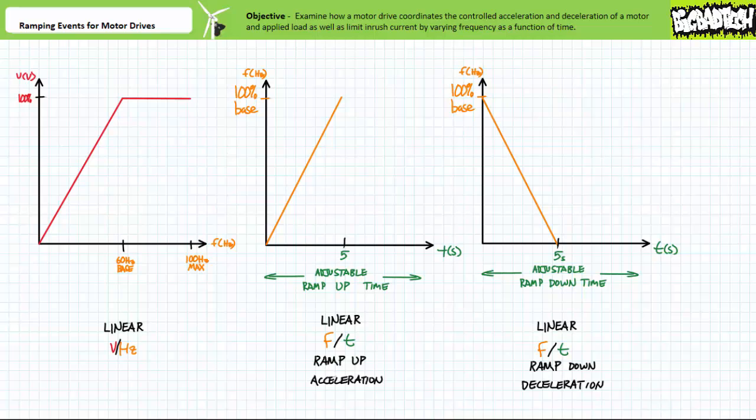Acceleration and deceleration ramp-up and ramp-down times are often user-customizable within a given range. Consider a motor drive with the same simple linear volts per hertz profile, where excitation frequency is ramped from zero to the base frequency over a relatively snappy five seconds. When the run command is asserted, excitation frequency would be ramped from zero to 60 hertz, only this time over five seconds. Voltage would also be ramped from zero to 100% over the same five-second period. Whatever driven load is attached to the motor is briskly accelerated during this much shorter and steeper acceleration period.